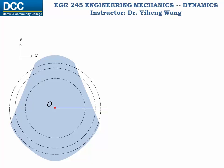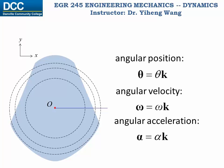For rigid body planar motion, once again, since rotation is limited within the x-y plane, therefore as Cartesian vectors, angular position, angular velocity, and angular acceleration all have a component of k, which is the unit vector of the z-axis that is perpendicular to the x-y plane. And similar to the sign convention of moment, positive angular motion indicates counterclockwise rotation, and negative motion indicates clockwise rotation.